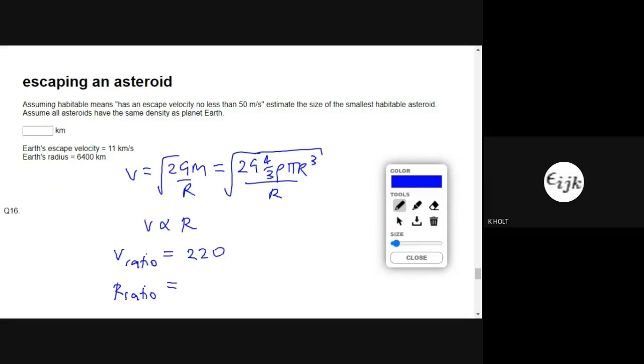I take the Earth's radius and I divide it by 220, and that gives me 29 km. Sorry, the radius ratio should also be 220, so to get the radius I do 11 km divided by 220, which is 29 km.